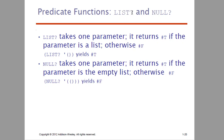Here we have list and null predicate functions. The null predicate takes one parameter — if the list is empty it returns true, otherwise it returns false. If the parameter is a non-empty list, null returns false.